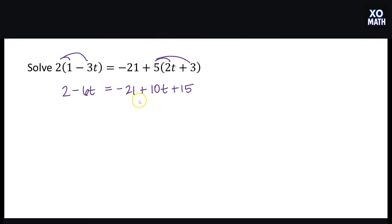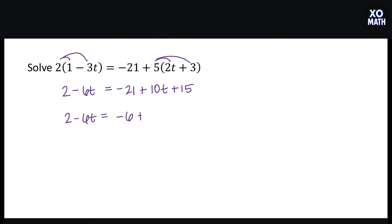On the right side, we already have like terms, so we'll add them together. Negative 21 plus 15 is negative 6, giving us 2 minus 6t is equal to negative 6 plus 10t.